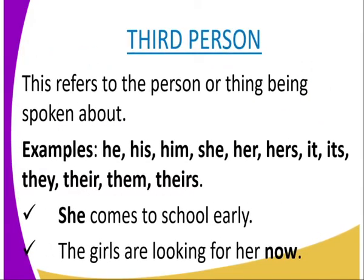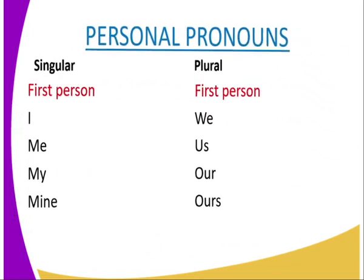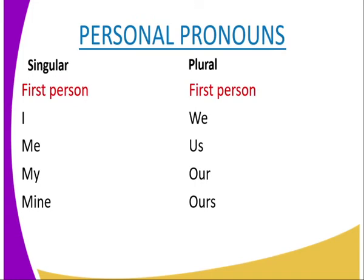The third person refers to the person or thing being spoken about. Examples of third person pronouns include: he, him, his, she, her, it, its, they, them, and theirs. For example: 'She comes to school early' — 'she' is third person. 'The girls are looking for her' — 'her' is third person.